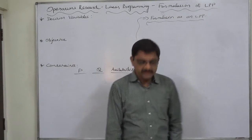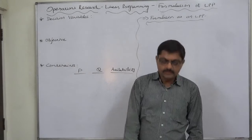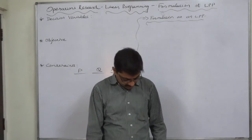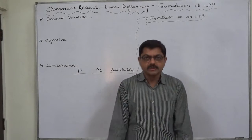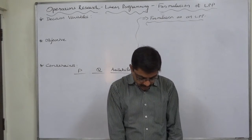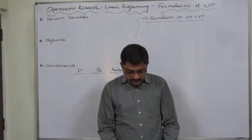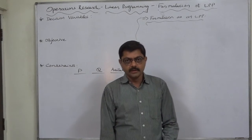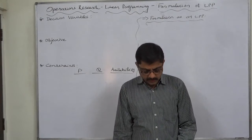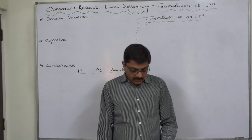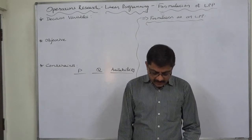Hello and welcome. Let us take a new case of formulation of an LPP. The problem is: a company sells two different products P and Q, making a profit of rupees 40 and rupees 30 per unit respectively. They are both produced with the help of a common production process.